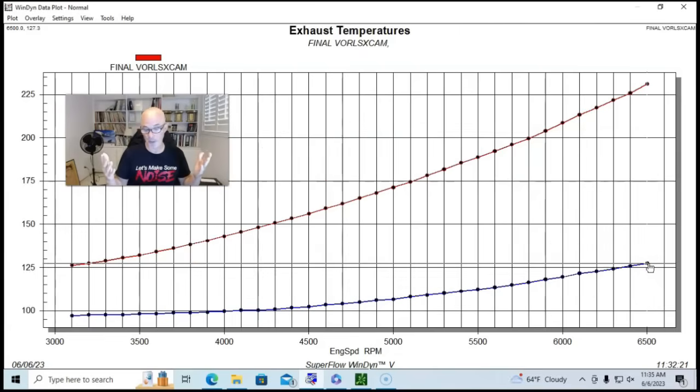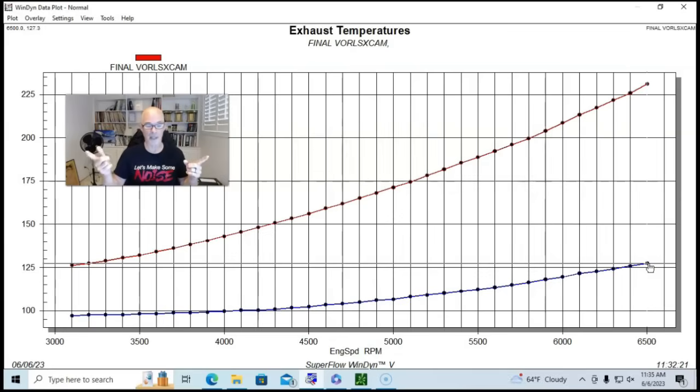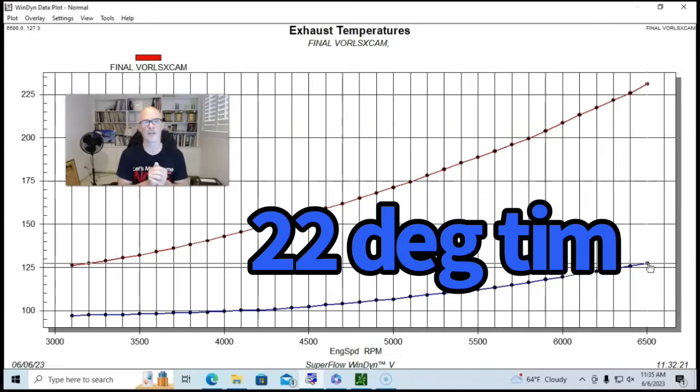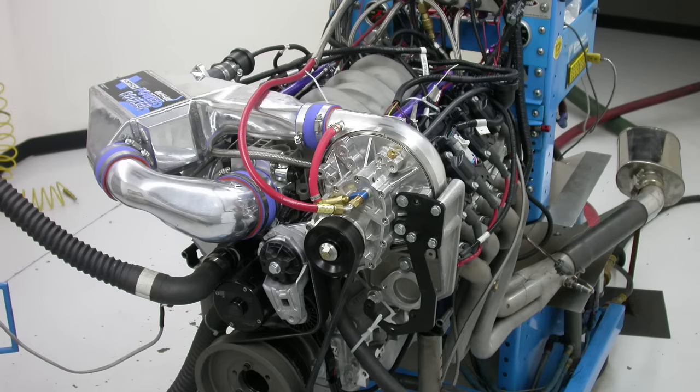So the intercooler at 10 pounds knocked 100 degrees of charge temperature out of it. Obviously, that's going to do two things. It's going to help it make more power, but primarily it's going to make it much safer. So if we drop the charge temperature down 100 degrees, we make it safer, less likely to detonate. It helps be able to run this thing on pump gas. We ran this on a combination of pump gas and 91 and 100. We'd like to be safe. So that's why we do it. But on this combination, intercooler doing its job. This is normally what we see. It's going to knock at least 100 degrees out on an efficient thing.